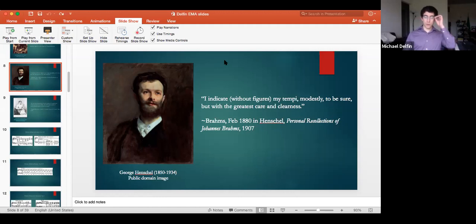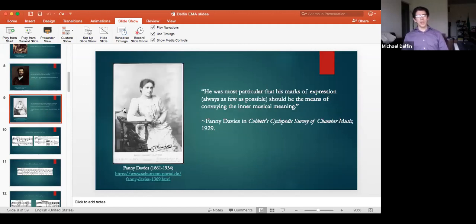Brahms's reasoning is made clear in the same letter to Henschel. 'I indicate, without figures, my tempo modestly, to be sure, but with the greatest care and clearness.' Op. 24 exemplifies this precision, as we shall soon see. Any extant metronome markings from Brahms have been preserved through the labors of his circle. He himself withdrew every one of them before publication. A few instances from Brahms's prior solo piano works provide ample evidence of precision.